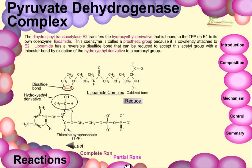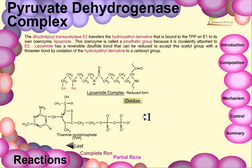The dihydrolipoyl transacetylase, or E2, transfers the hydroxyethyl derivative bound to TPP on E1 to its own coenzyme, lipoamide. This coenzyme is called a prosthetic group because it is covalently attached to E2. Lipoamide has a reversible disulfide bond that can be reduced to accept an acetyl group via a thioester bond, through oxidation of the hydroxyethyl derivative to a carboxyl group. When reduced with a proton, the disulfide bond is converted to two SH single bonds — the reduced form of the lipoamide complex.